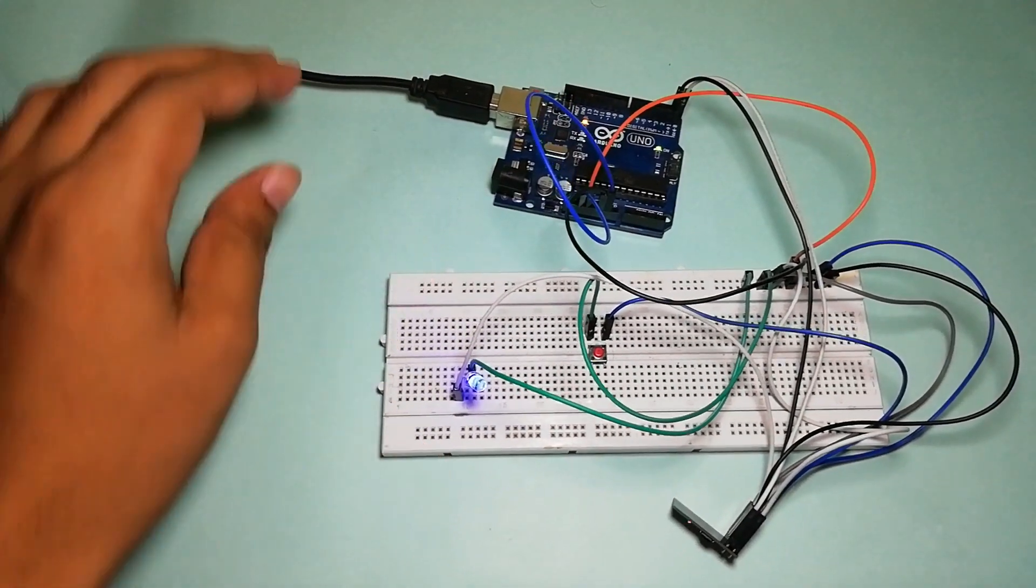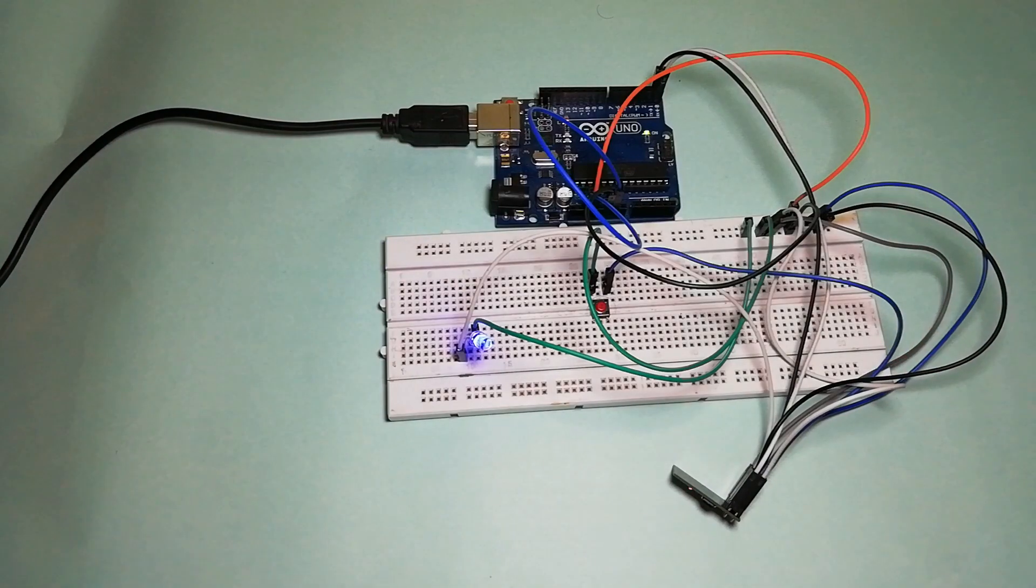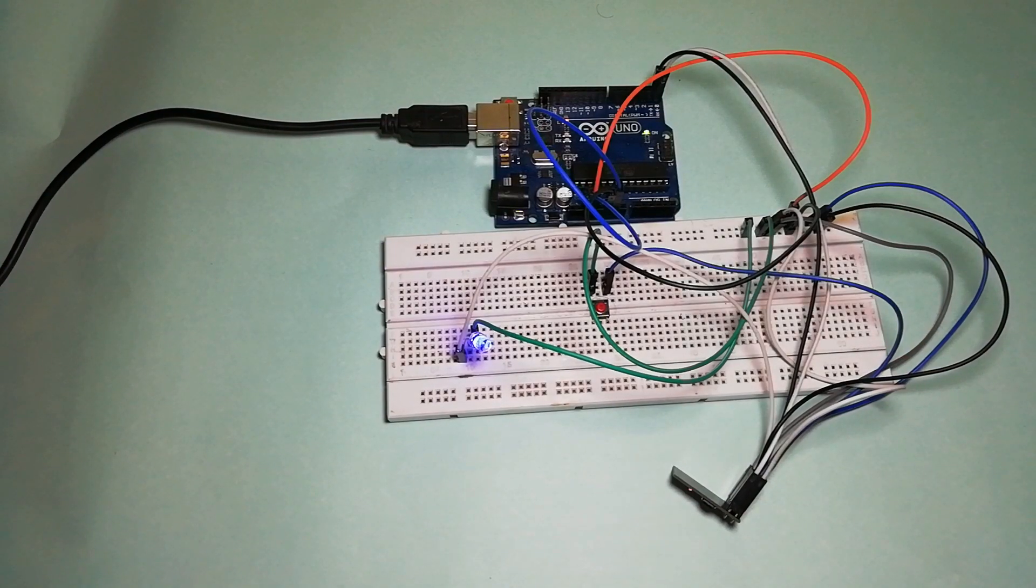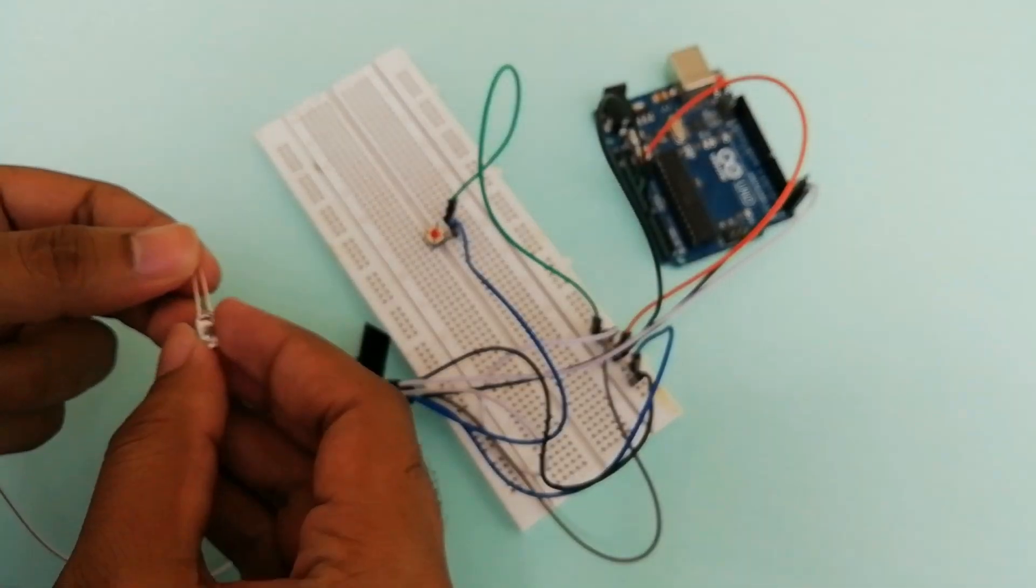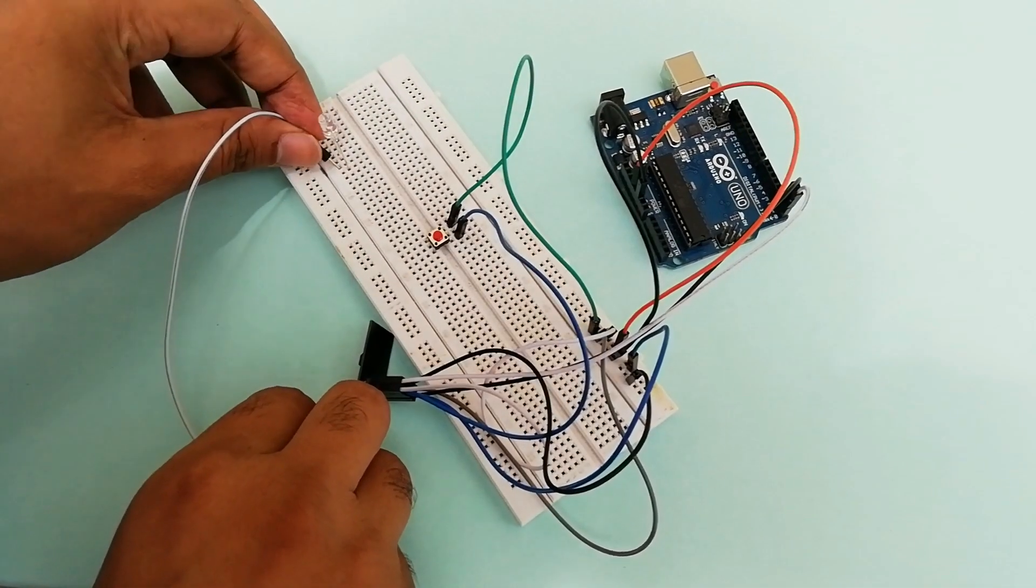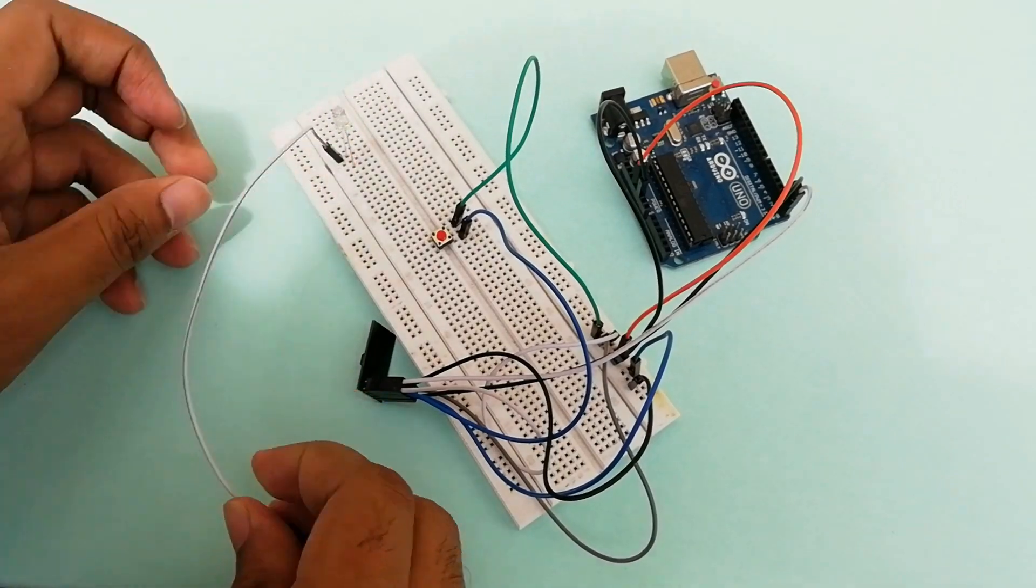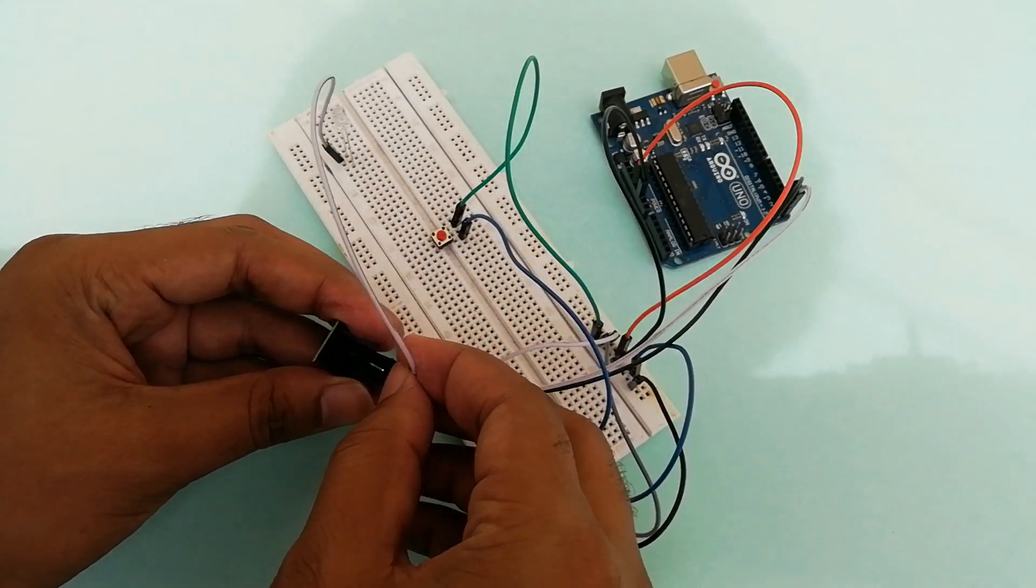Before seeing the ESP8266 Arduino interface, we need to know a few things about the ESP8266 module. The ESP8266 Wi-Fi module comes with default firmware which supports AT commands. After interfacing the ESP8266 Wi-Fi module with Arduino and uploading our own program, the original firmware will be erased.